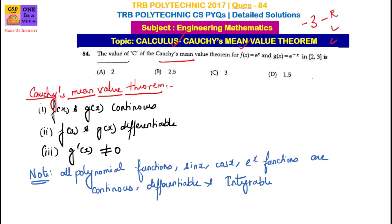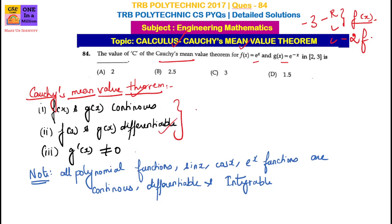In Cauchy's Mean Value Theorem, we have two functions, f of x and g of x. There are three conditions to satisfy: f of x and g of x must be continuous; f of x and g of x must be differentiable; and g dash of x must not be equal to zero.